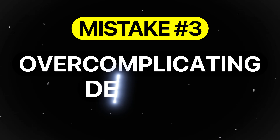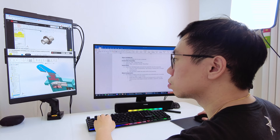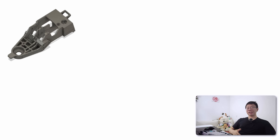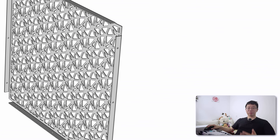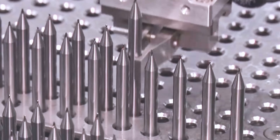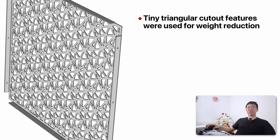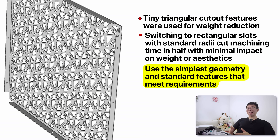Mistake number three is over-complicating designs with zero value. Simplicity is often overlooked by mechanical engineers eager to show their design skills. An example is adding unnecessary ribs, undercuts, or intricate cutouts that increase cycle time and cost without adding functional value. In one aluminum plate design I reviewed, dozens of tiny triangular cutouts were used for weight reduction. While they did look good, they required separate tool paths and very small cutters, greatly increasing machining time. Switching to simple rectangular slots with standard radii cut machining time in half with minimal impact on weight or aesthetics. Use the simplest geometry that meets requirements and leverage standard features wherever possible.